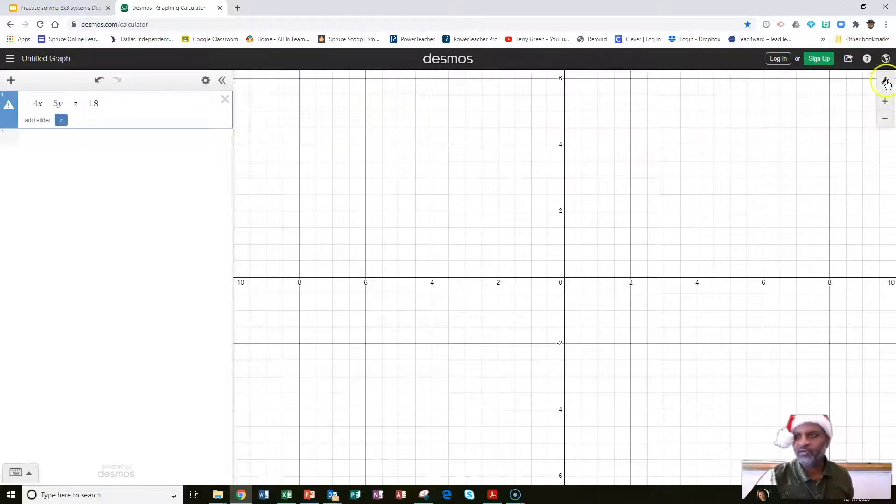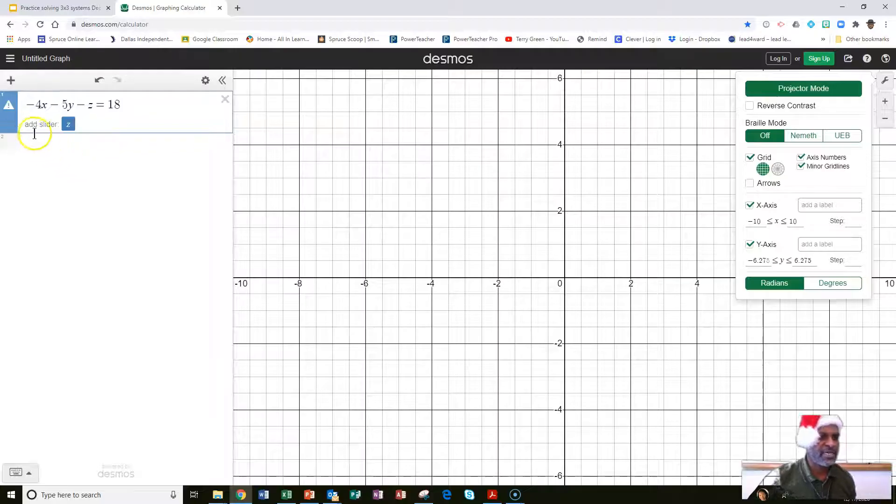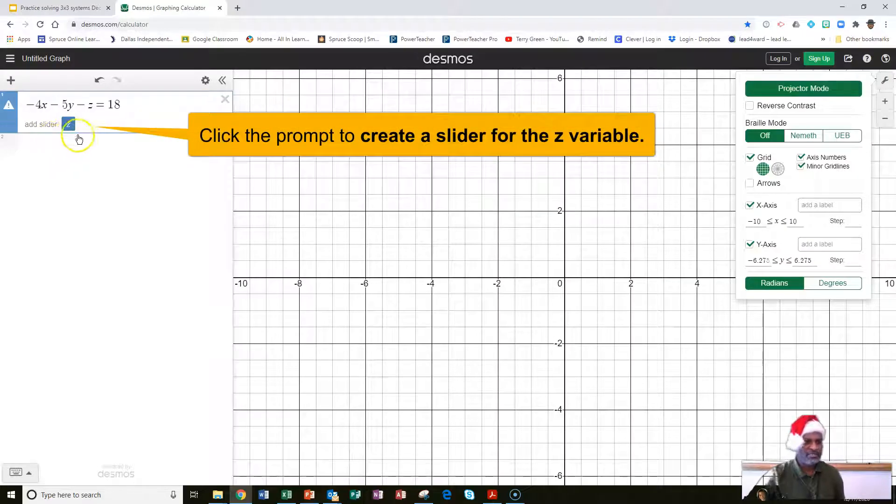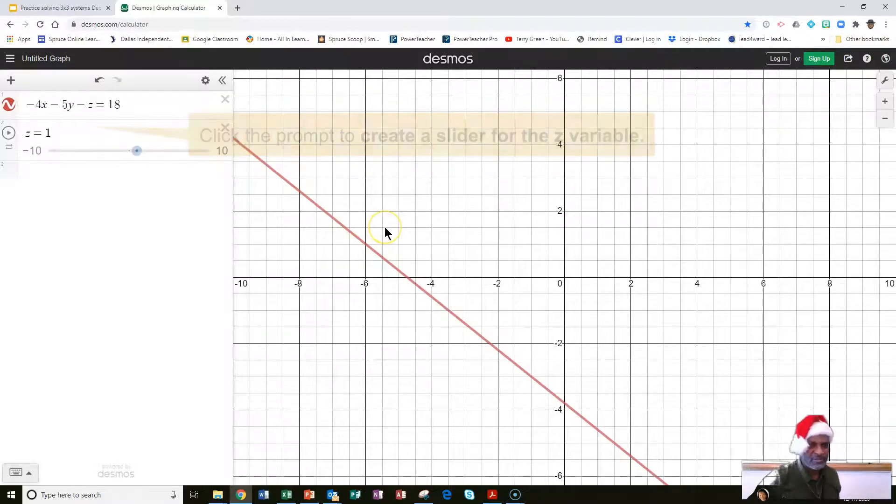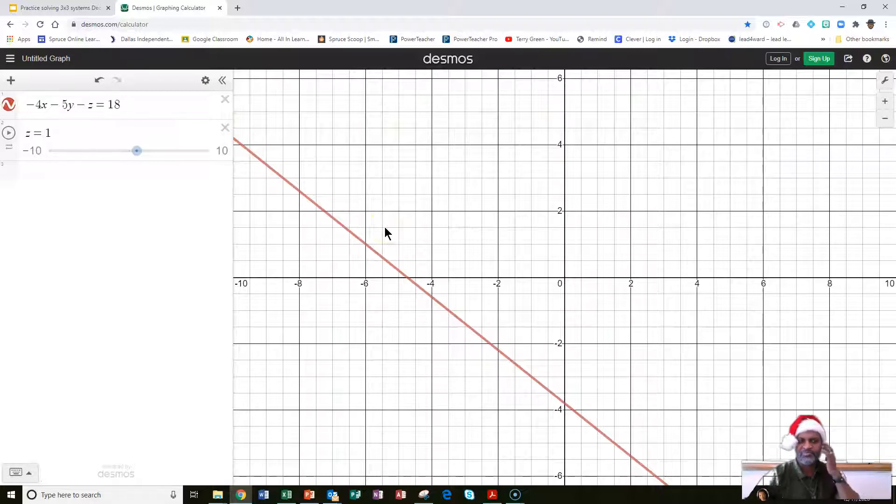You might notice that it's prompting you to add a slider. Let's click on that, and now we have a line.